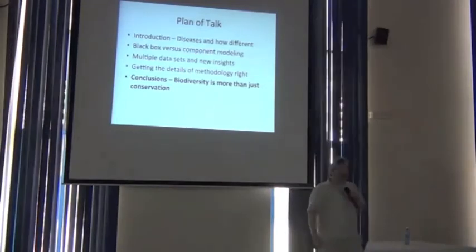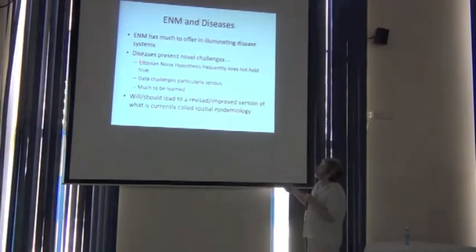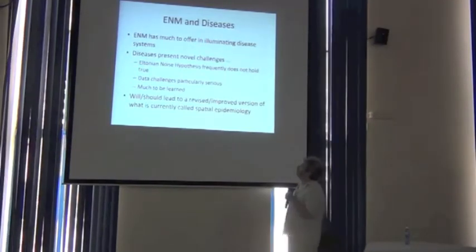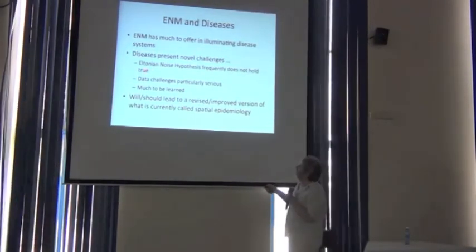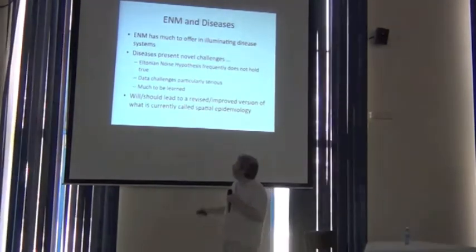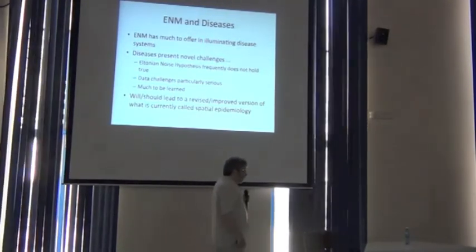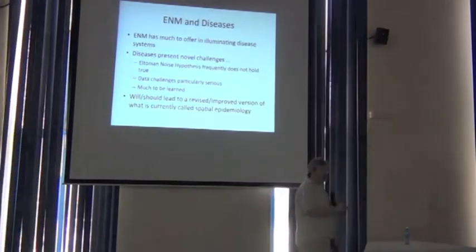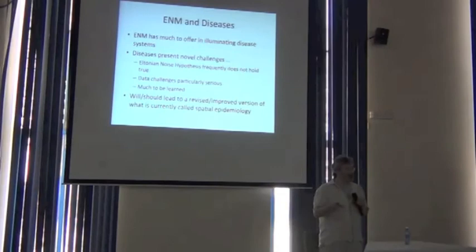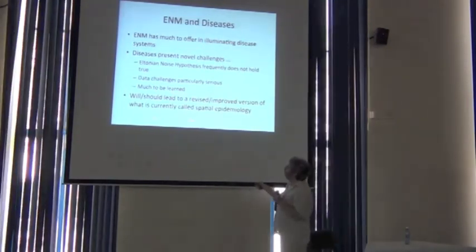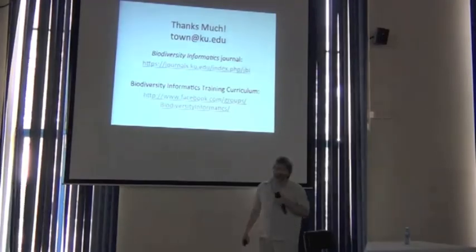I'll wrap up quickly. For niche modeling and diseases: niche modeling has a lot to offer, but diseases present some pretty unique challenges. We may not believe in the Eltonian noise hypothesis for a lot of disease systems, and the data challenges are massive. We still have a lot of thinking to do. But it really comes down to this: what's been lacking in spatial epidemiology is a perspective of biogeography and macroecology — and we do have that to offer to the field. That can lead to a pretty serious and profound revision of what's called spatial epidemiology.